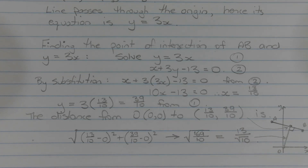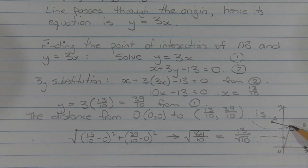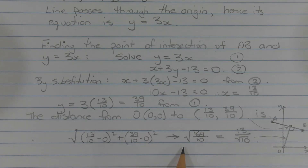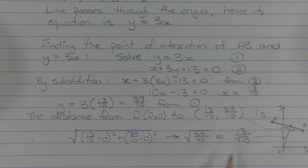Finally, use the distance formula to find the length of the interval from the origin to the point of intersection. We have the square root of (13 over 10 minus 0) squared plus (39 over 10 minus 0) squared, which equals the square root of 169 over 10, which equals 13 over the square root of 10 units.